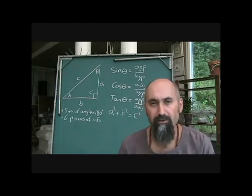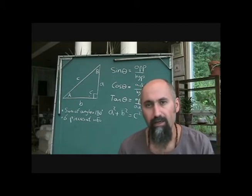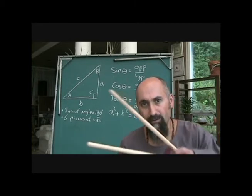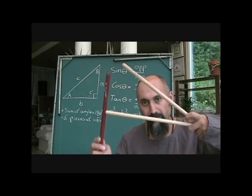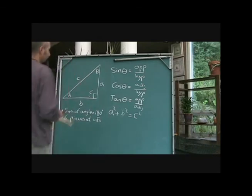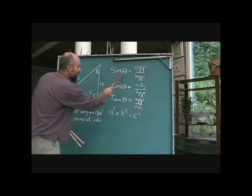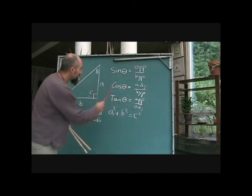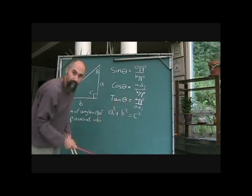Some people have a hard time understanding sine, cosine, and tangent, but they shouldn't. Once you grasp the concept that the angle controls the opposite side, that's the relationship. For trig functions: sine theta equals opposite over hypotenuse, cosine theta equals adjacent over hypotenuse, and tangent theta equals opposite over adjacent.